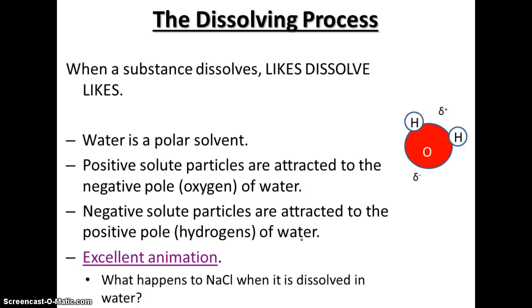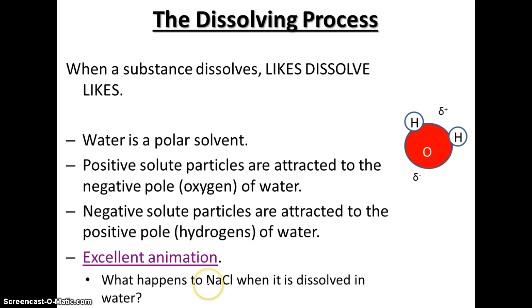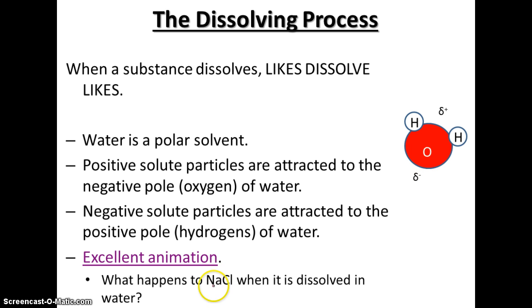If we have sodium chloride, what happens when it actually dissolves? This oxygen, which is very negative, is attracted to the sodium, which is very positive. So it's able to rip off this sodium — or dissolve it — using the partial negative to pull off the partial positive of this ionic substance.